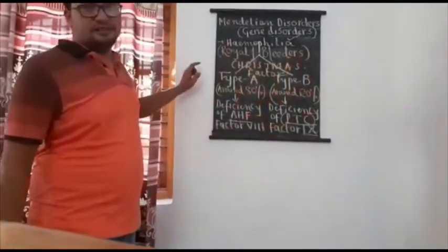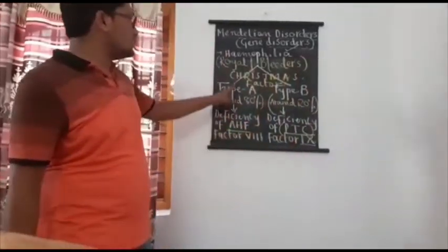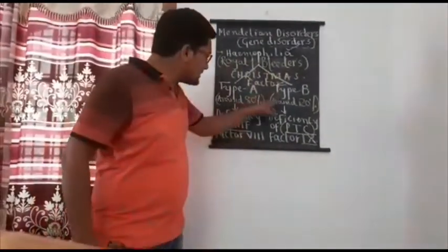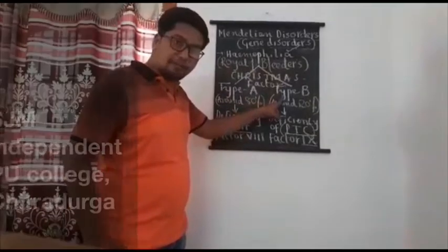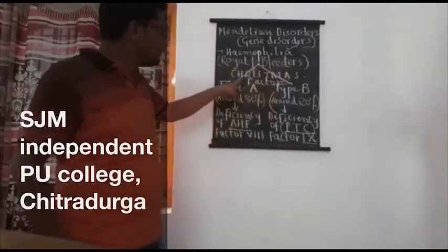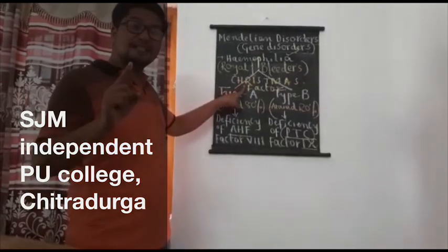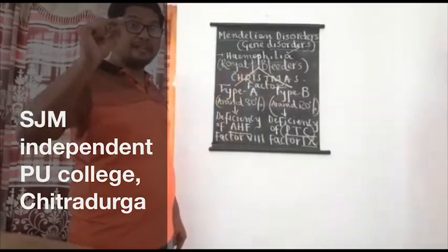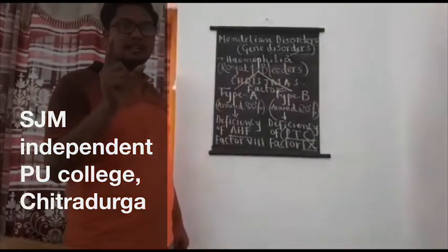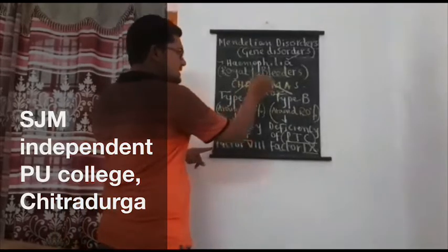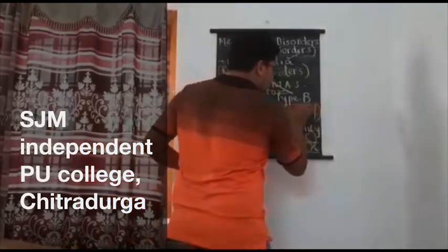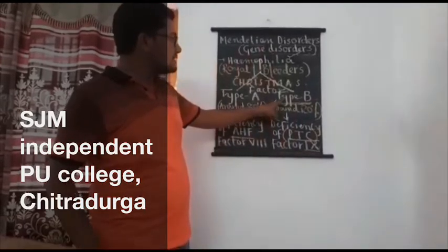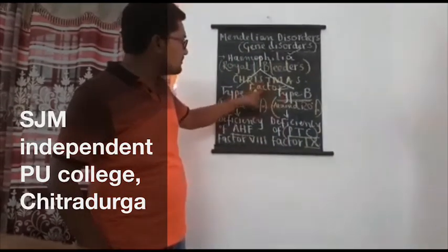Blood clotting factor number 9 is also called Christmas factor. So when a person suffers from hemophilia type B — caused due to deficiency of the Christmas factor — the disease is called Christmas disease. An important question for NEET and AIIMS exams: Christmas disease is the other name for hemophilia type B, because it is caused due to deficiency of the Christmas factor (blood clotting factor number 9).